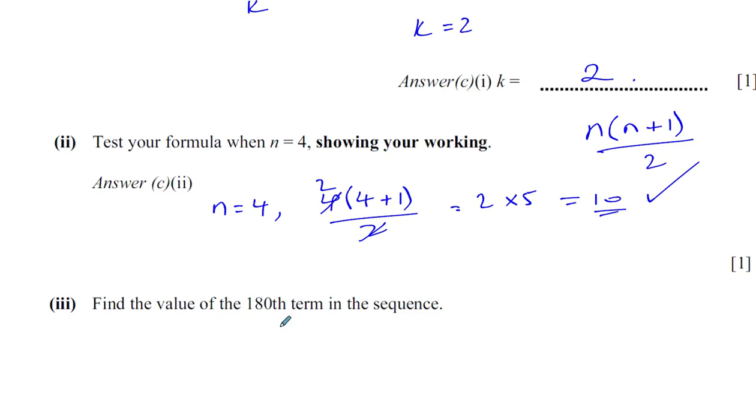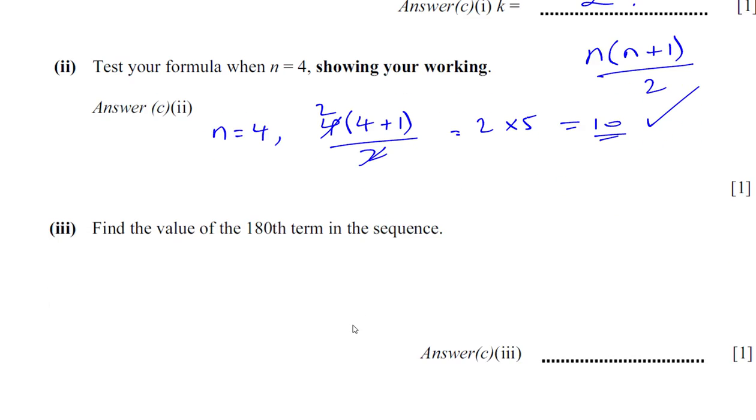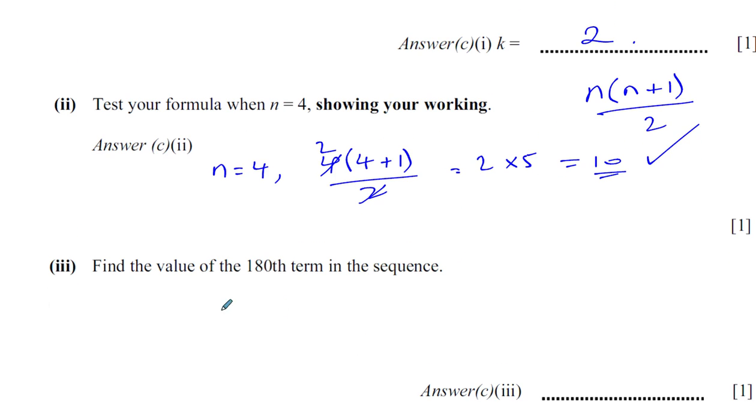And part c, find the value of the 180th term of the sequence. We have to put n equals 180. So 180 times 180 plus 1 over 2. 2 times 180 gives you 90.